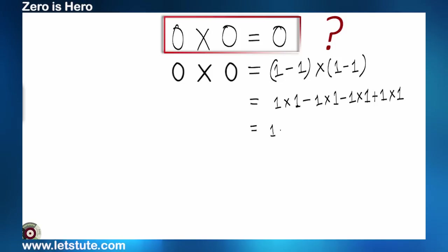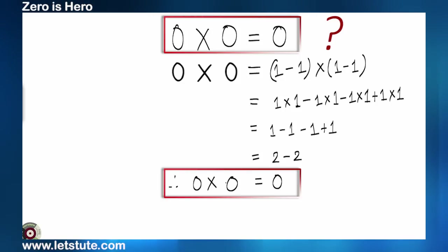Now, let's solve it. So, two minus two will become zero and therefore, zero into zero is zero and we can again write this as zero is equal to zero square. So, one more thing we can conclude that square root of zero is again zero.